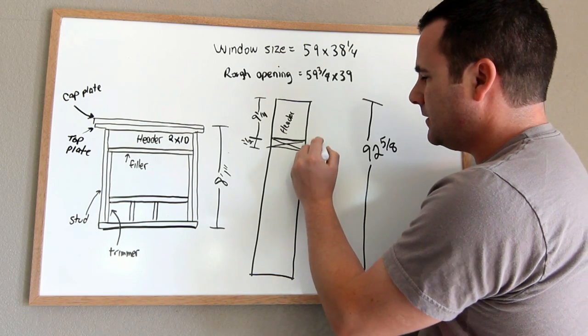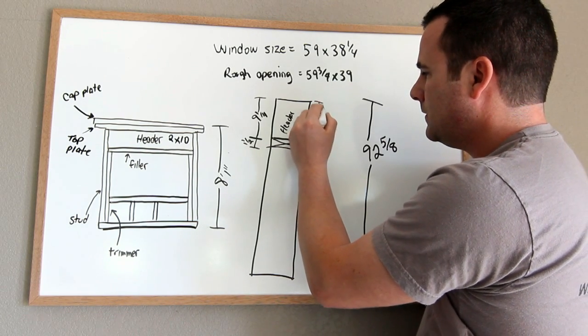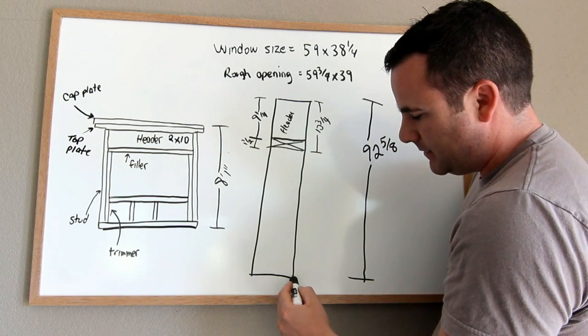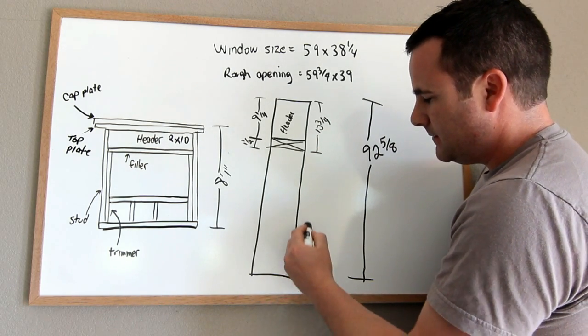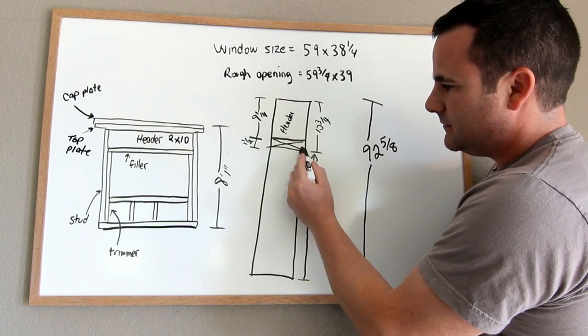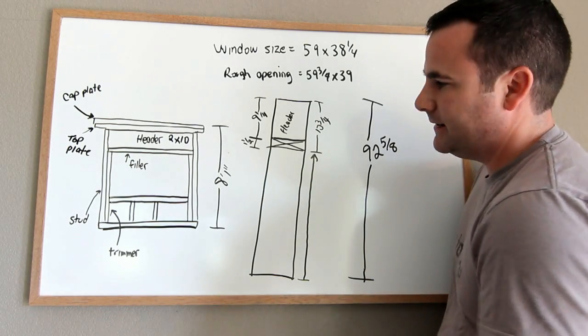And if you just mark it all out, then what you can do is just measure from the bottom of your stud this way to the bottom of your filler. And that's what your trimmer height is.